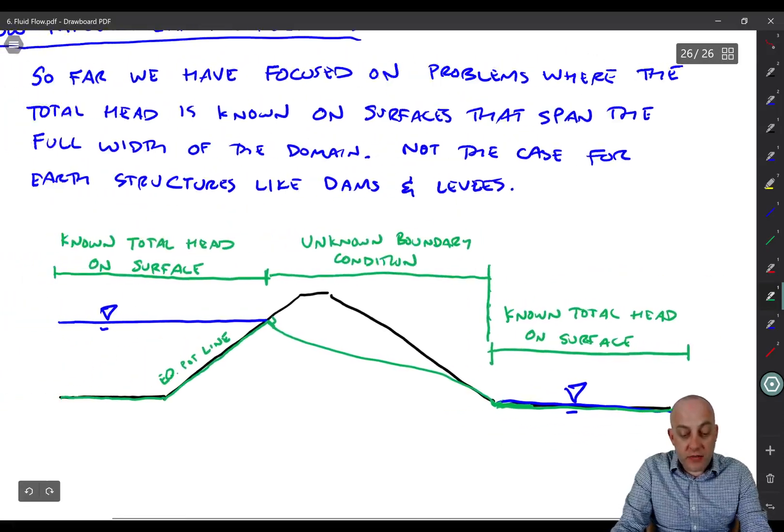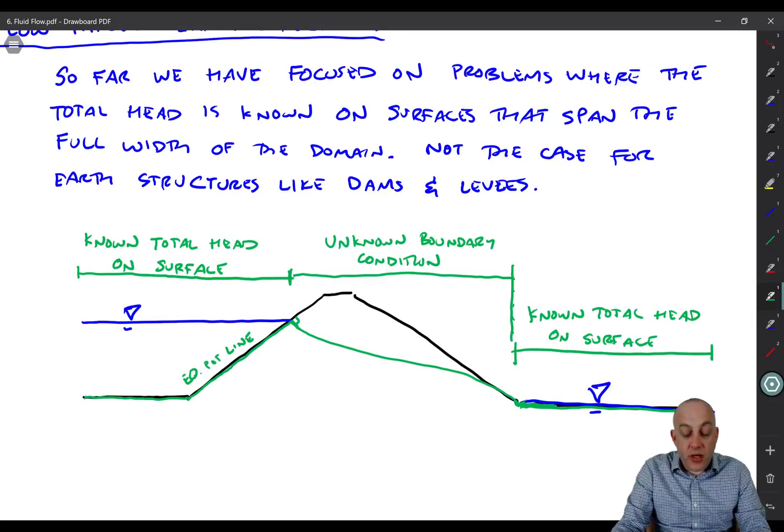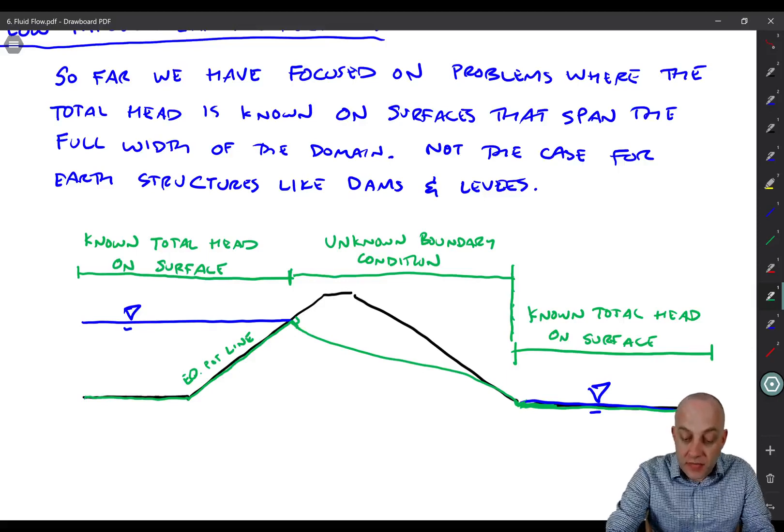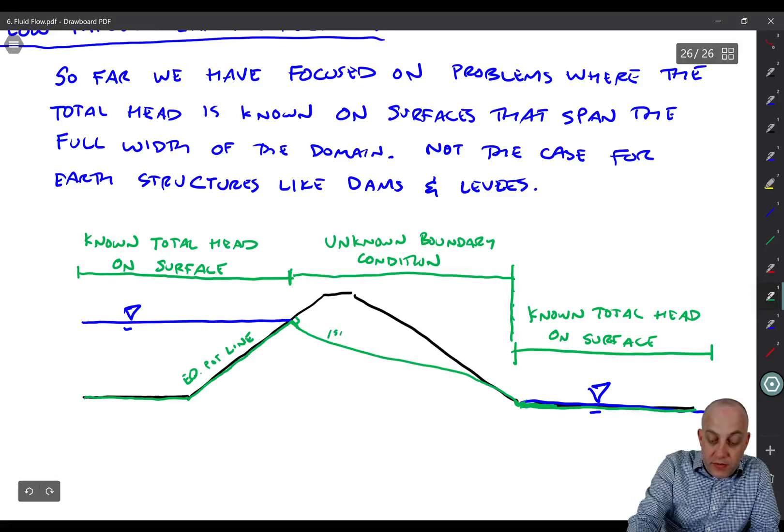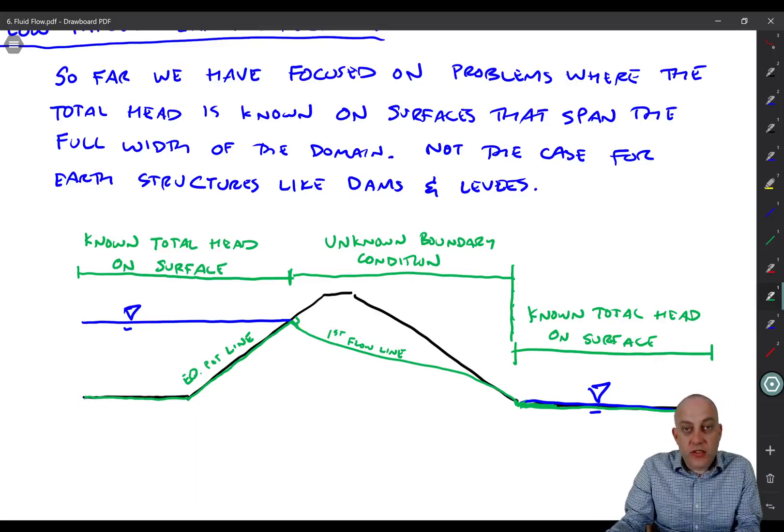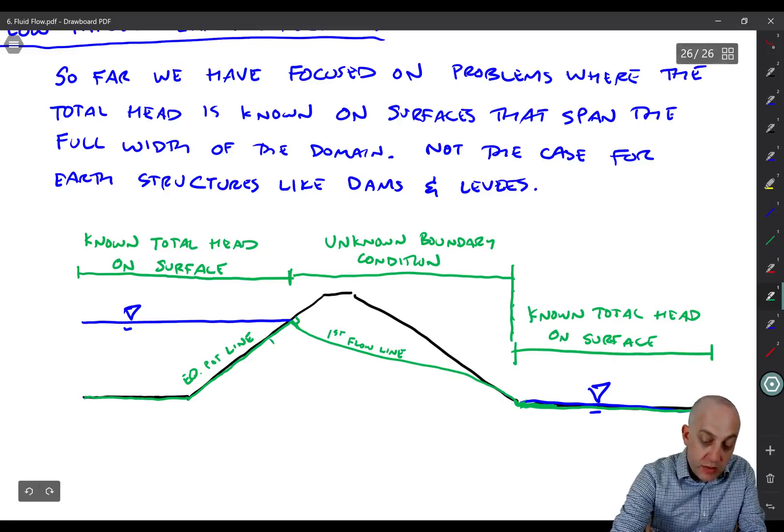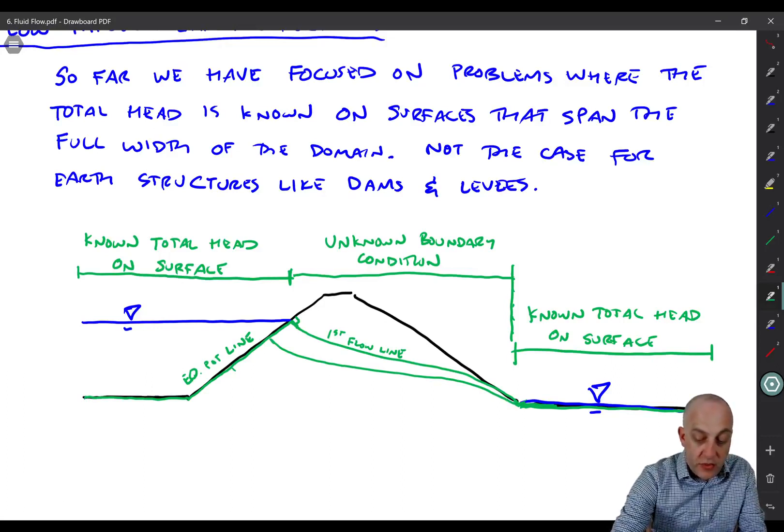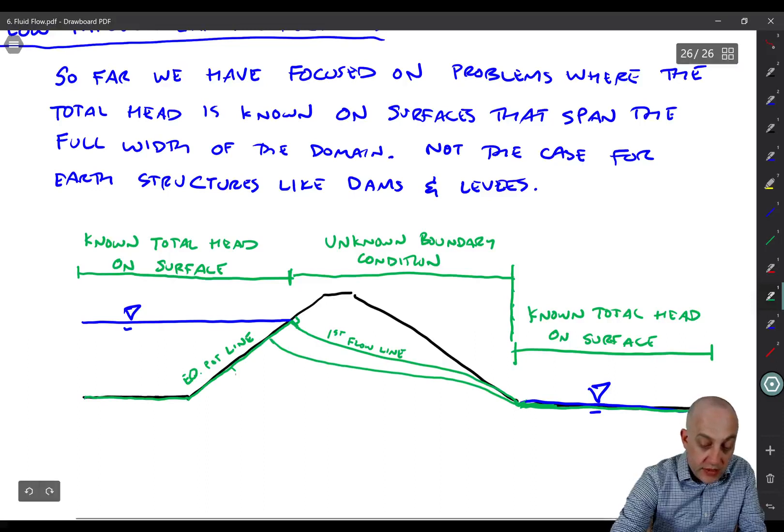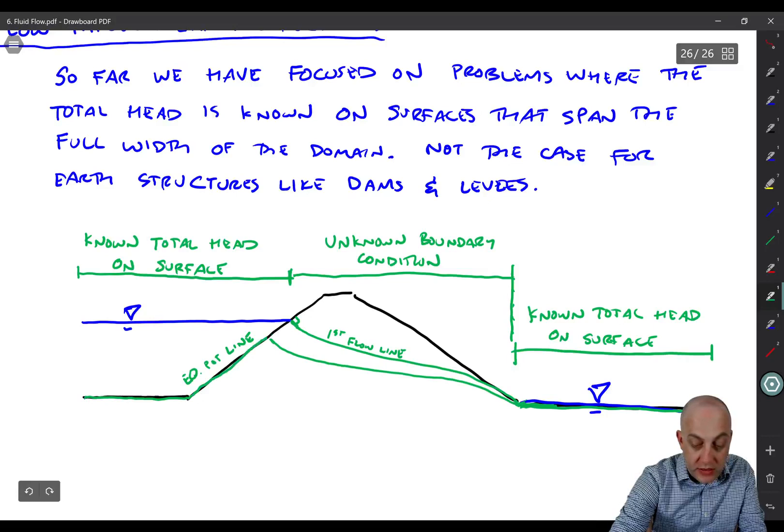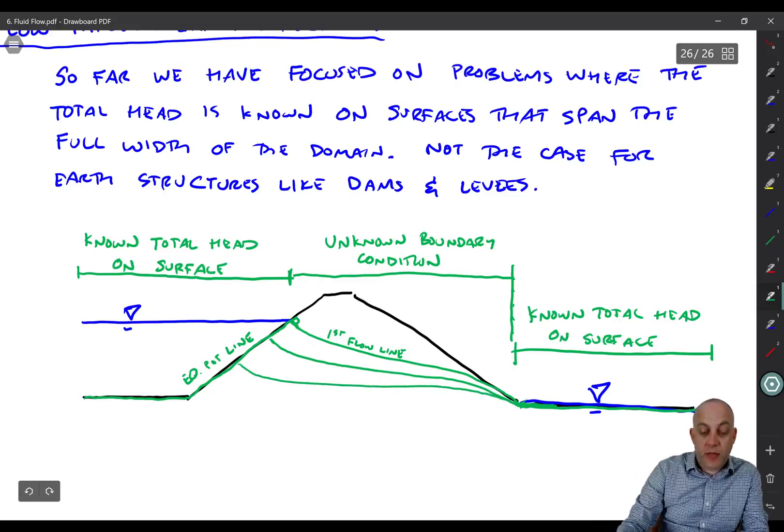Now we've got the equipotential line. Well, we have our first flow line. This is the, we'll call it the first flow line. And now all we need to do is sketch in some more flow lines that go kind of along that same pathway. And I'll draw one here. Again, it has to be perpendicular. And then it's going to come like this. A bit smaller as we go. So then I'll draw another one here. Maybe we'll just have three flow lines.